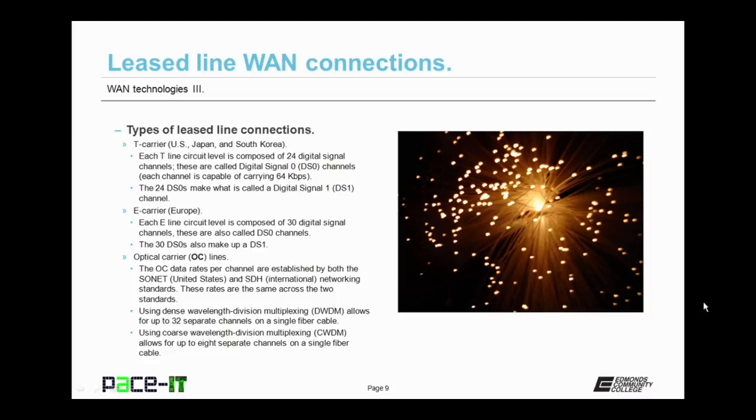The first method is dense wavelength division multiplexing, DWDM. It allows for up to 32 separate channels on a single fiber cable. Or you could use coarse wavelength division multiplexing, which allows for up to 8 separate channels on a single fiber optic cable.